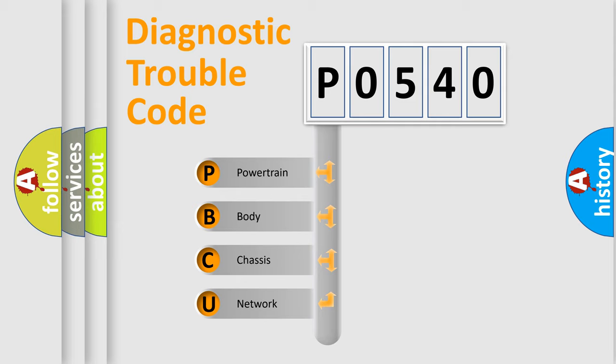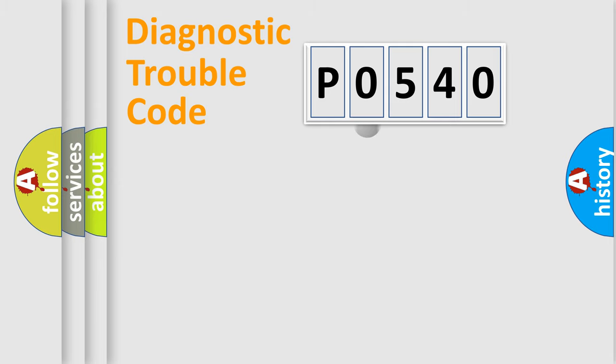We divide the electrical system of an automobile into four basic units: powertrain, body, chassis, and network. This distribution is defined in the first character code.